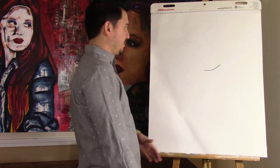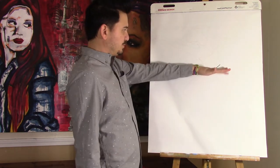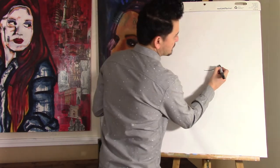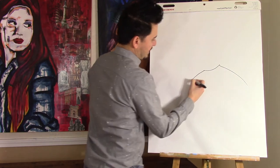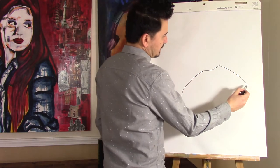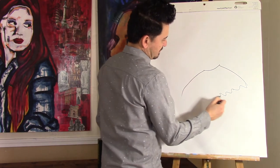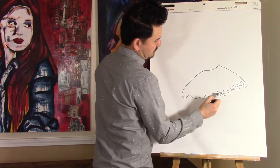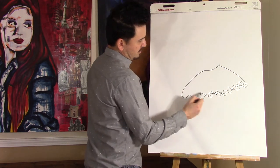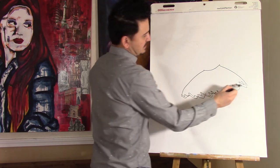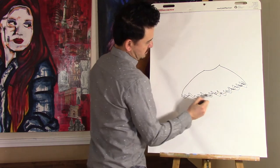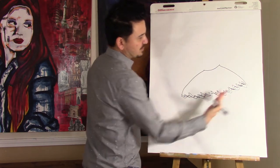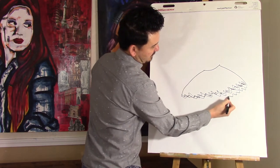Her waistline should be somewhere in the middle of your paper or slightly above. You know how skirts go out — you bring one line down on either side, and they're wavy and you can add as much or as little squiggly lines as you like. Then there's the one underneath — you want to make sure that you see the one underneath.